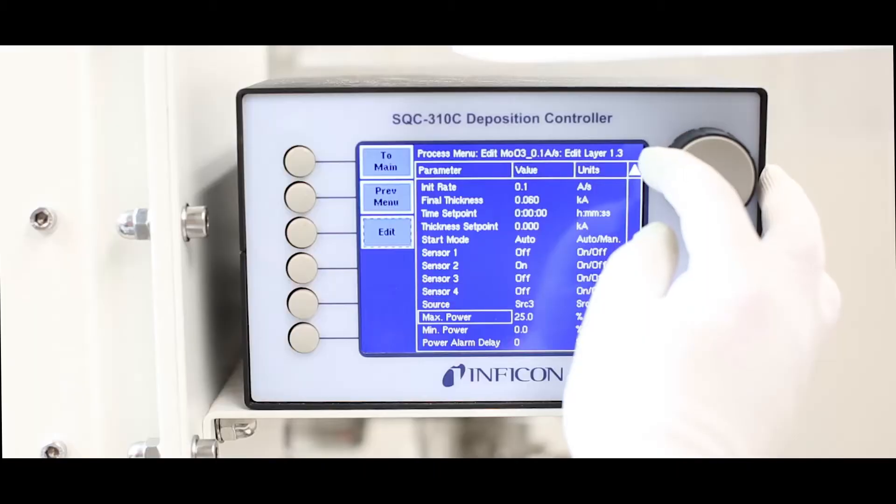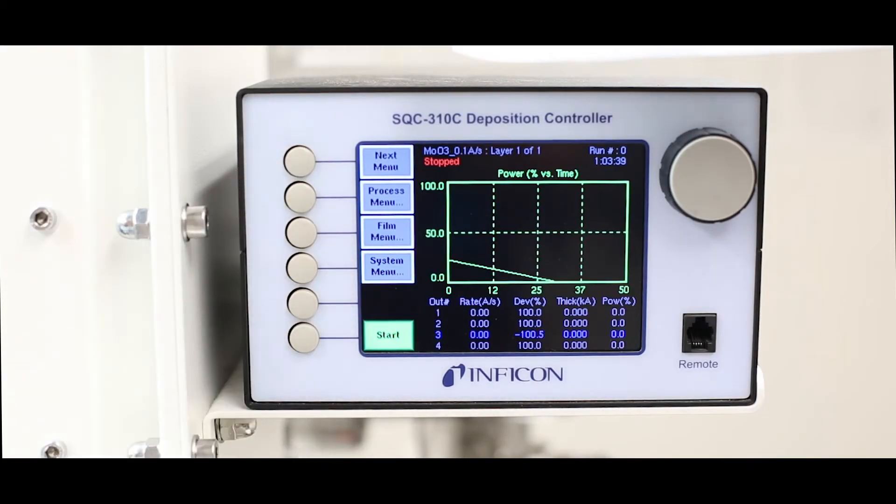Once the conditions are optimized, the system can be scaled for industrial production, reducing the cost of organic solar cells for Canadian and global consumers.